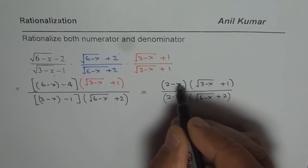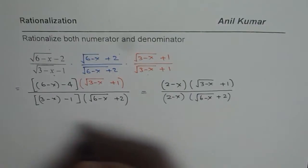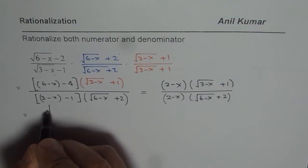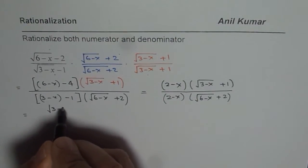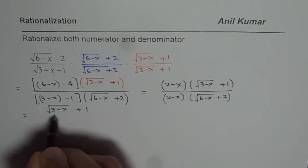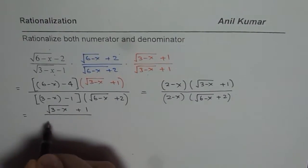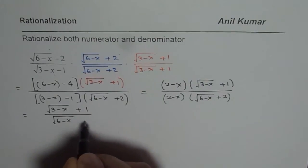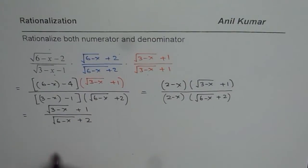Now 2 minus x in the numerator and 2 minus x in the denominator cancel out. What we get is square root of (3 minus x) plus 1 divided by square root of (6 minus x) plus 2. That is our answer after rationalizing both numerator and denominator.